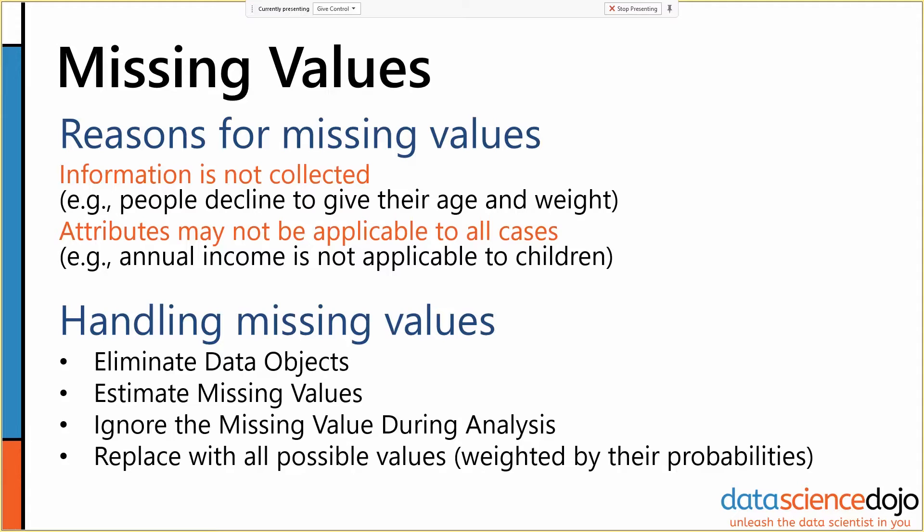We'll talk a lot more about handling missing values when we get to data preprocessing. But the fundamental ways we can handle it are: throw out all the data objects that have any missing values; estimate missing values using means or medians or something else; with some algorithms but not all, ignore the missing values on a row-by-row basis; or just throw the attribute out entirely, which is something we might want to do if we have an attribute that is 80% missing.